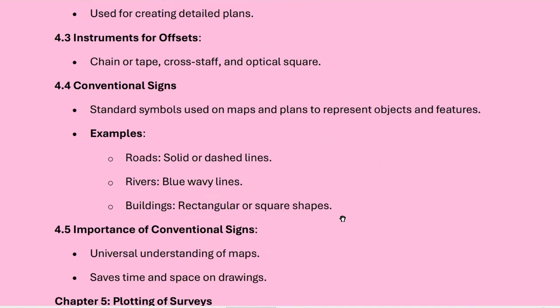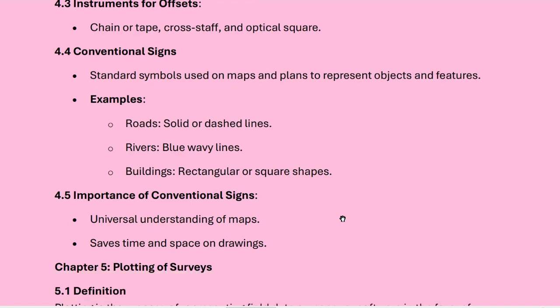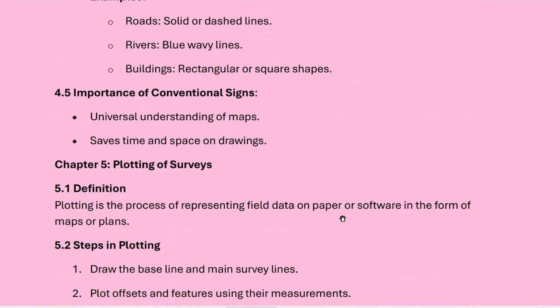What are conventional signs? A conventional sign is a standard symbol used on maps and plans to represent objects and features. For example: roads are shown as solid or dashed lines, rivers as blue wavy lines, and buildings as rectangular or square shapes. The importance of conventional signs is that they universalize understanding of maps and save time and space on drawings.